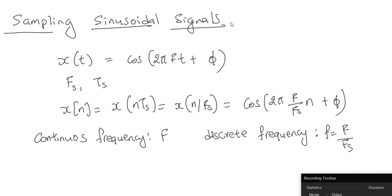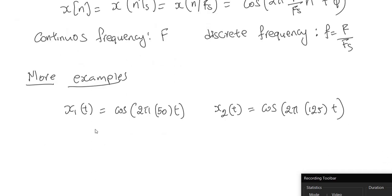Let's talk about sampling sinusoidal signals in general. Let's take a sinusoidal signal where x of t is cosine of 2π capital F t plus φ. Note that I'm using capital F to denote continuous frequencies. Let's say the sampling rate is capital Fs and the sampling period is Ts, which will be 1 over Fs. As per our discussion, x of n should be x of n over Fs. Substituting n over Fs for t, I get cosine of 2π times capital F over Fs times n plus φ. So if the continuous frequency was capital F, then my discrete frequency is capital F over Fs. This is basically the relationship for going from a continuous frequency to a discrete frequency when sampling.